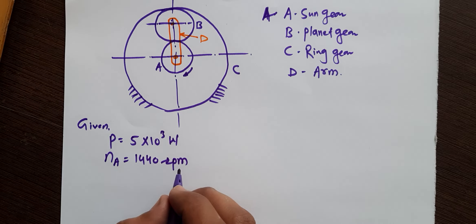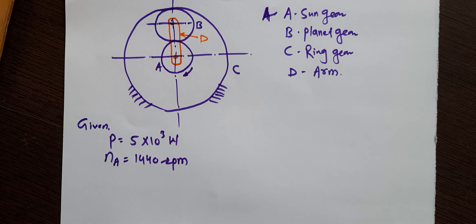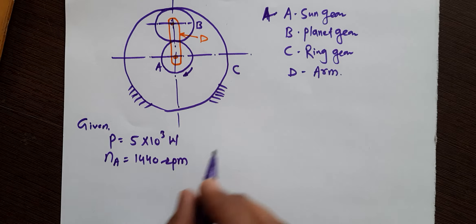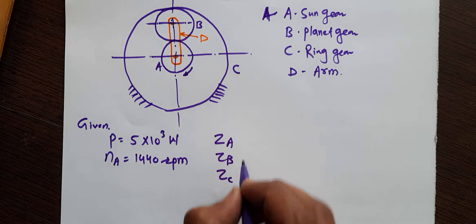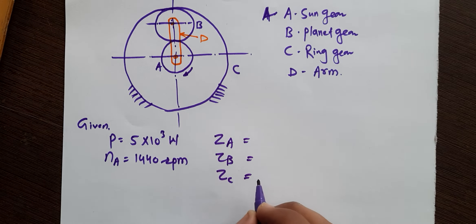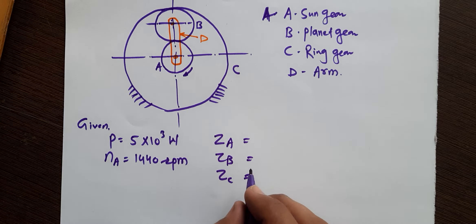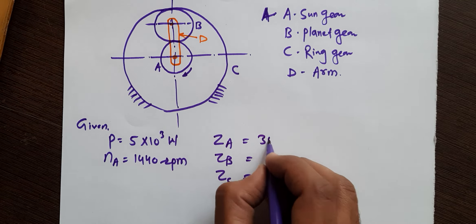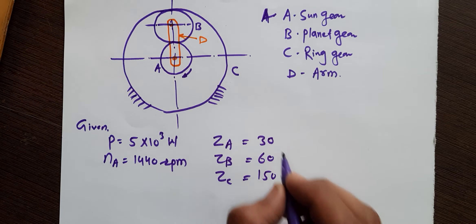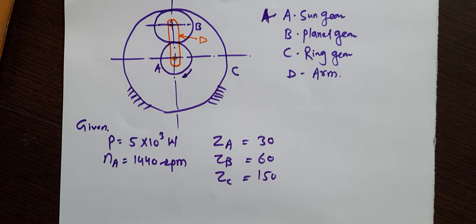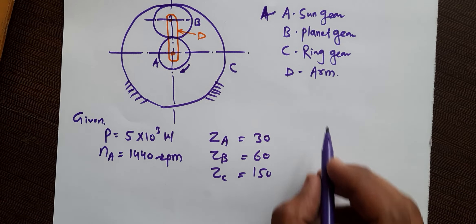Once again, the number of teeth on Sun gear A, planet gear B, and fixed ring gear C are: ZA, ZB, ZC are 30, 60, and 150 respectively. The module is 4 mm.